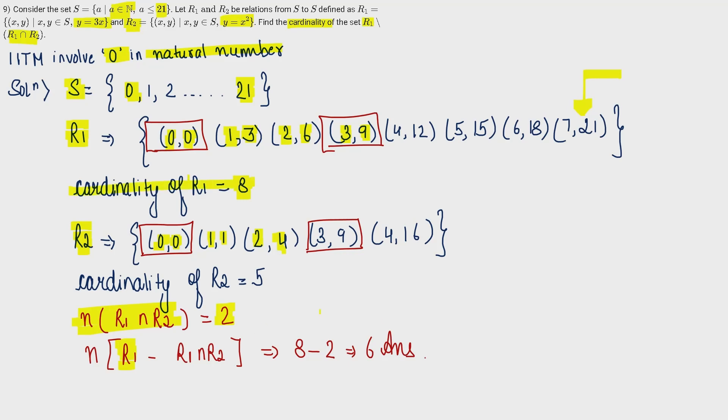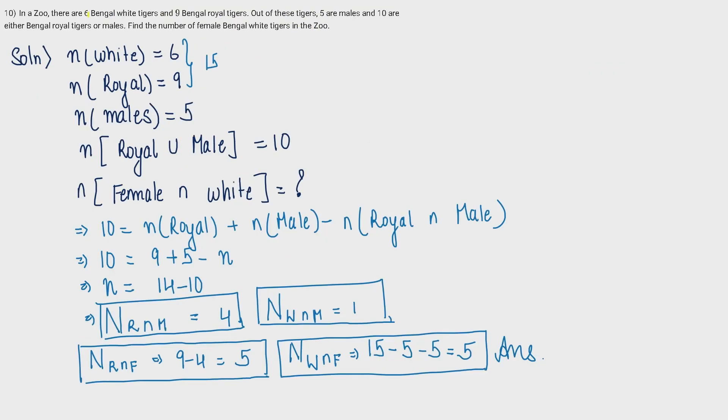Last question. In a zoo we have 6 Bengal white tigers and 9 Bengal royal tigers. Out of these tigers, 5 are male and 10 are either Bengal royal tiger or male. We need to find the number of female Bengal white tigers in the zoo. So all the information was given. I have written it: white tigers are 6, royal tigers are 9, total number of males in these entire tigers are 5, the tigers which are royal and are male are 10. Now I need to find the number of females that are white tigers.